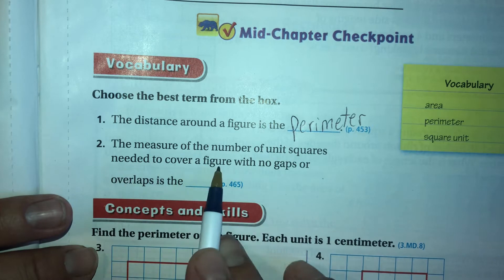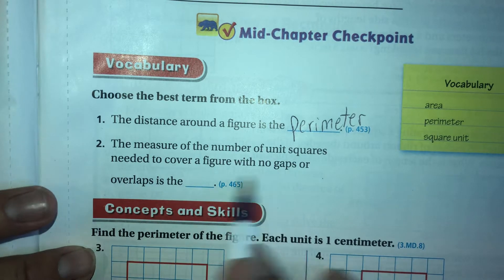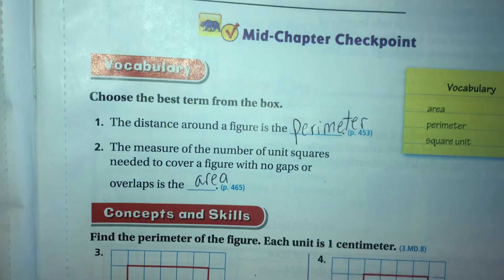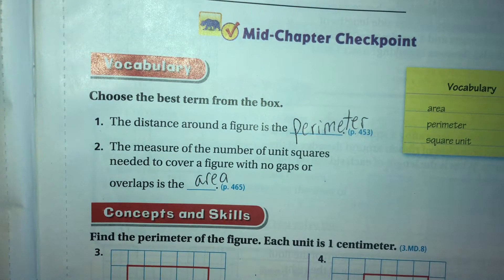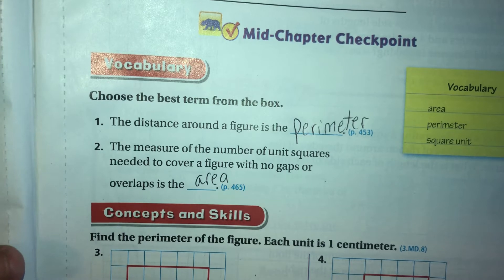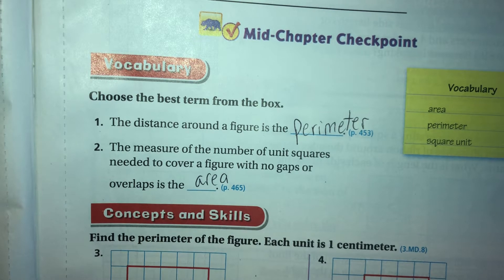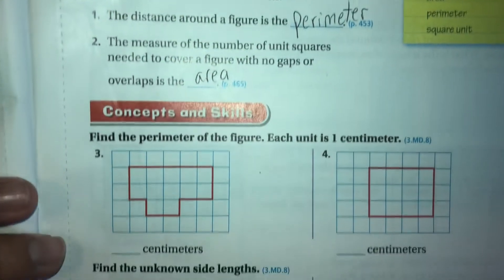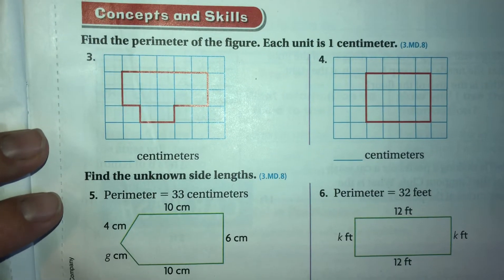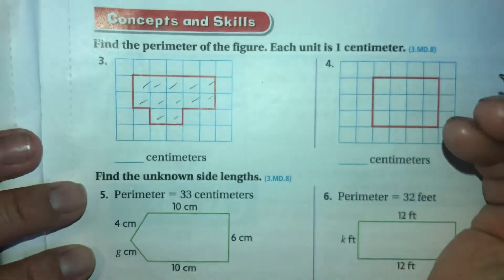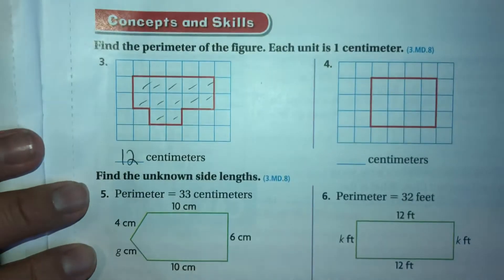The measure of the number of unit squares needed to cover a figure with no gaps or overlaps is the area. This is the inside part. The measure of the number of unit squares needed to cover a figure with no gaps or overlaps is the square unit. No, I think that is the area. Okay, find the perimeter of the figure. Each unit is one centimeter. One, two, three, four, five, six, seven, eight, nine, ten, eleven, twelve - twelve square centimeters.